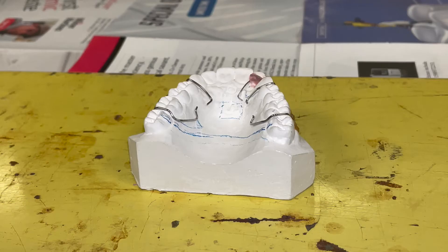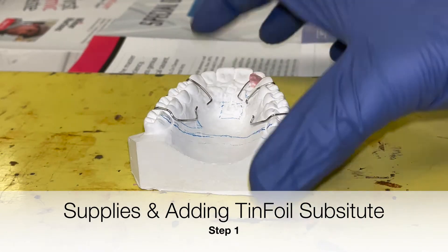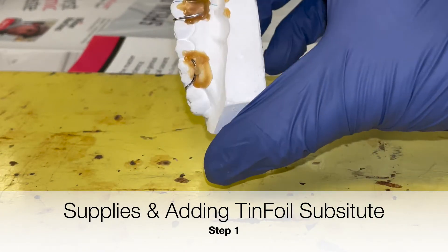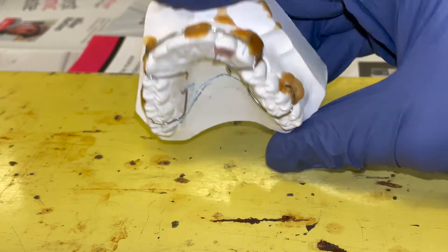In this video you will learn how to add acrylic to a retainer with an expansion screw. After you have bent all your wires, you want to make sure your wires are sticky waxed in place.